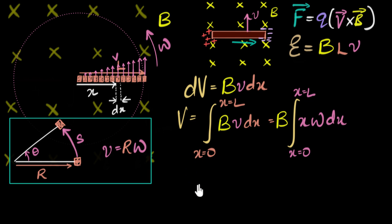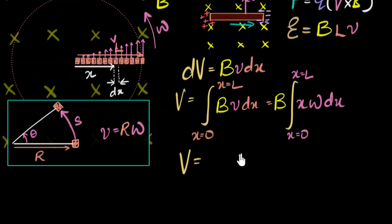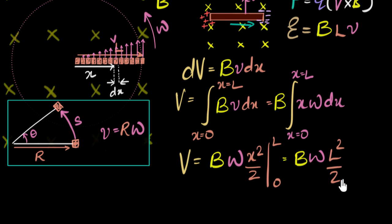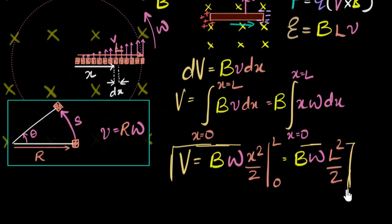The integral of x dx is x²/2. So the total potential difference equals B·omega times x²/2 evaluated from 0 to L. Substituting the upper and lower limits and subtracting gives B·omega·L²/2 minus zero. So the expression for the voltage — or the EMF, or the potential difference — induced between the ends of the spinning rod is B·omega·L²/2.